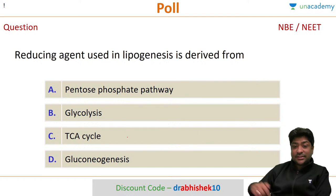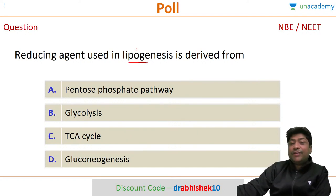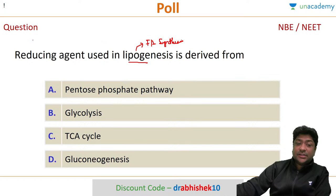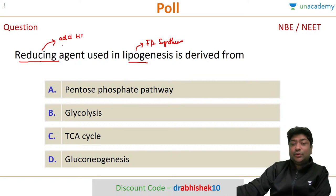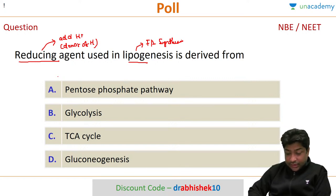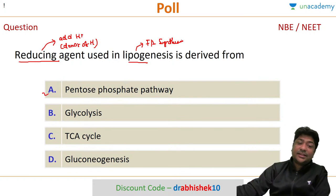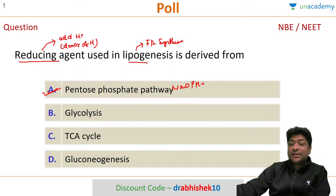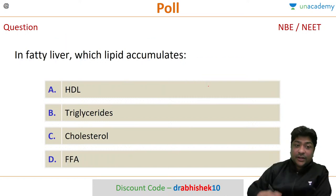Next question: what is the reducing agent used in lipogenesis — another name for fatty acid synthesis? A reducing agent is a donor of hydrogen. The correct answer is the pentose phosphate pathway, which provides NADPH + H. NADPH is the reducing agent used in fatty acid synthesis.